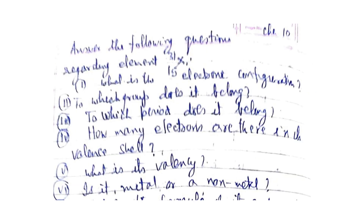Answer the following questions regarding an element having atomic mass 31 and atomic number 15: What is its electronic configuration? To which group does it belong? To which period does it belong? How many electrons are there in its valence shell? What is its valency? Is it a metal or a non-metal? What is the formula of its compound with sodium?